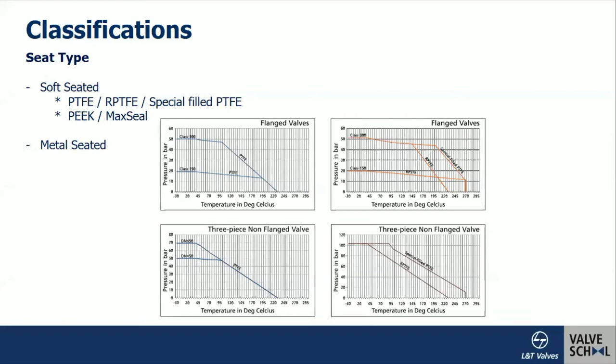The metal-seated variant uses a ball and seat made from 13% chromium steel or stainless steel hard-faced with stellite or tungsten carbide coating, to provide higher hardness and better wear resistance. It is important to note that when selecting a Class 800 ball valve with a soft seat, the valve is derated to the temperature and pressure limits of the seat material — not the full body class rating.